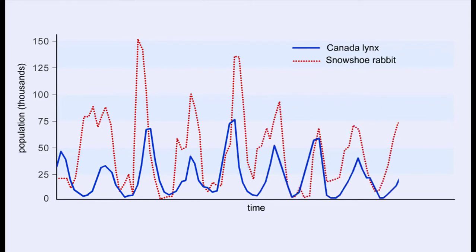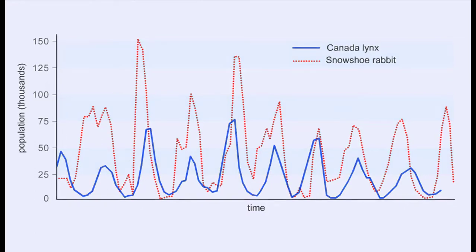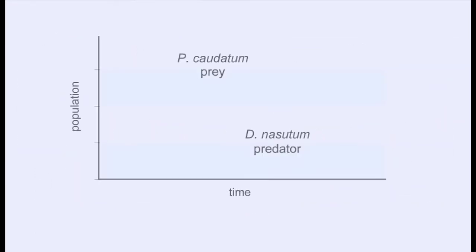If predation is without some limiting factors, the entire population of prey in a given area could be wiped out, which would in turn wipe out the predator population.